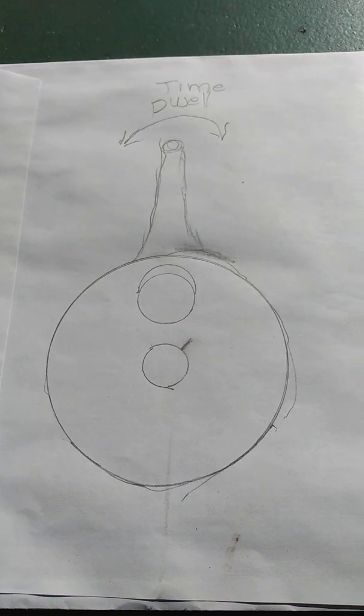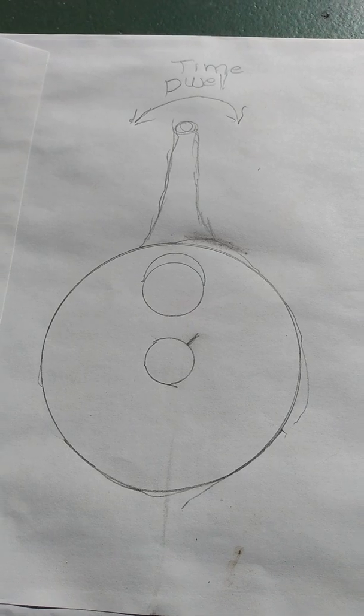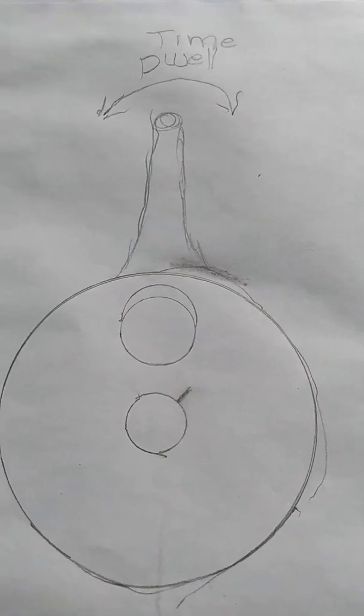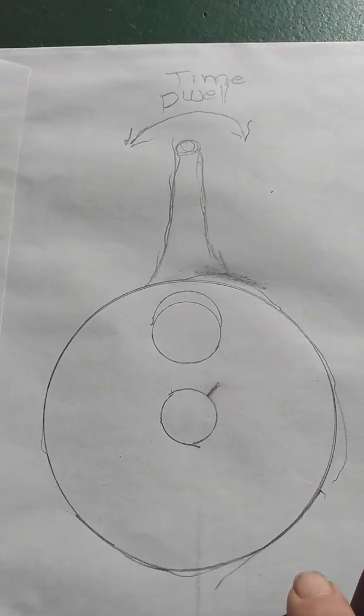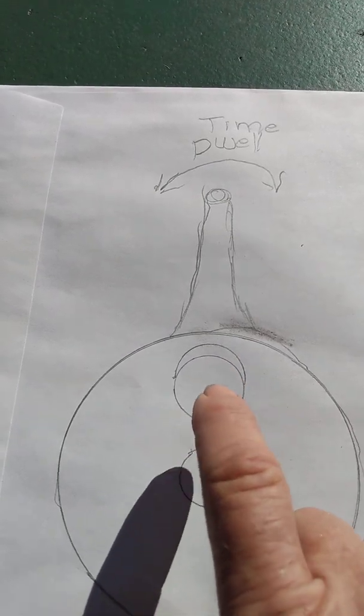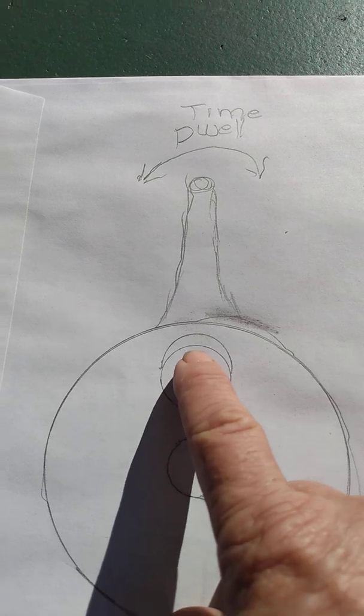Okay, just drew a little drawing of a hypothetical stroker crank. Both rods are equal lengths. The only difference on a stroker crank is the pin offset. Say this is a 40 and that's a 44 millimeter.